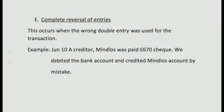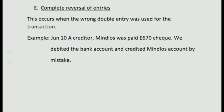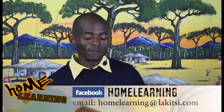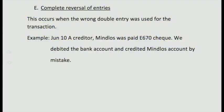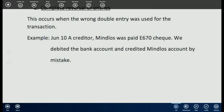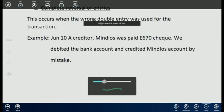The complete reversal of entries occurs when the wrong double entry was used. The trial balance continues to agree because the debit side was recorded with the correct amount and the credit side likewise — just on the wrong sides. For example, on the 10th of June a creditor Mildos was paid 670 by check. Instead of debiting Mildos and crediting bank, we debited bank and credited Mildos by mistake. Learners often associate 'creditor' with 'credit,' but a creditor is debited when being paid and credited when giving goods on credit.